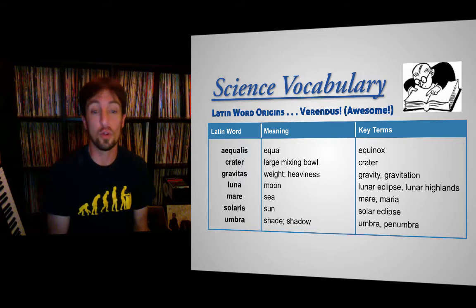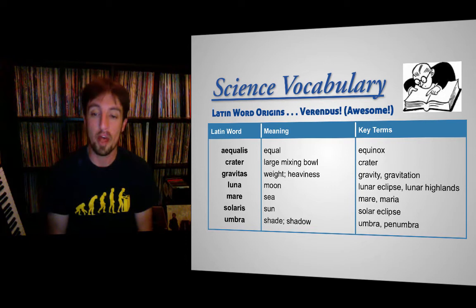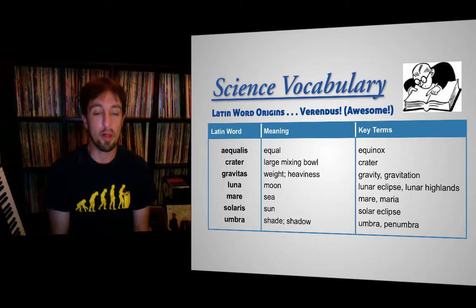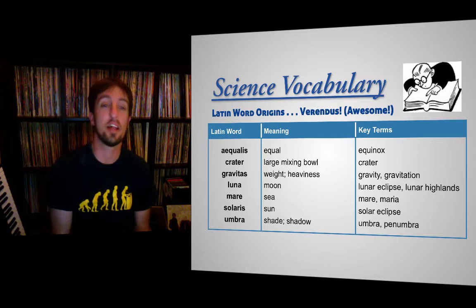Solaris — you recognize the word solar in there, so that is related to the sun. And then, of course, umbra, which if you think about it looks a little bit like umbrella. That means shade or shadow. So, penumbra and umbra are types of shadows, and we'll be learning a little bit more about those.